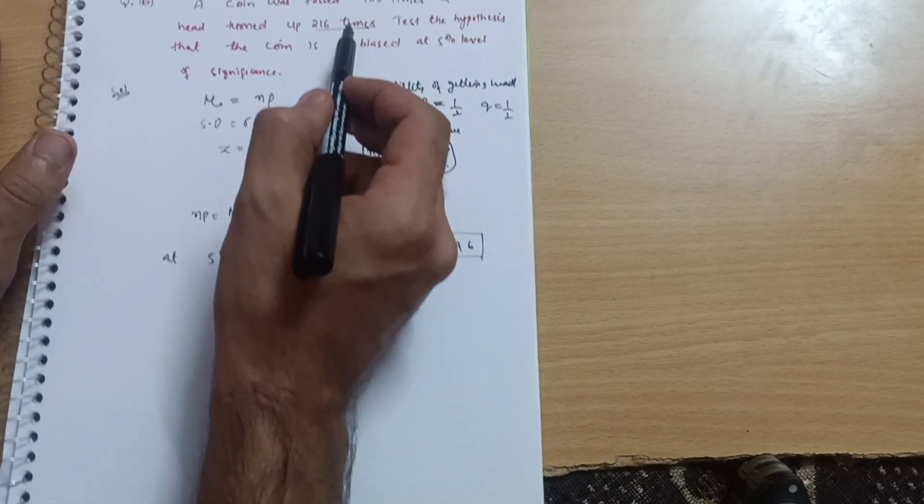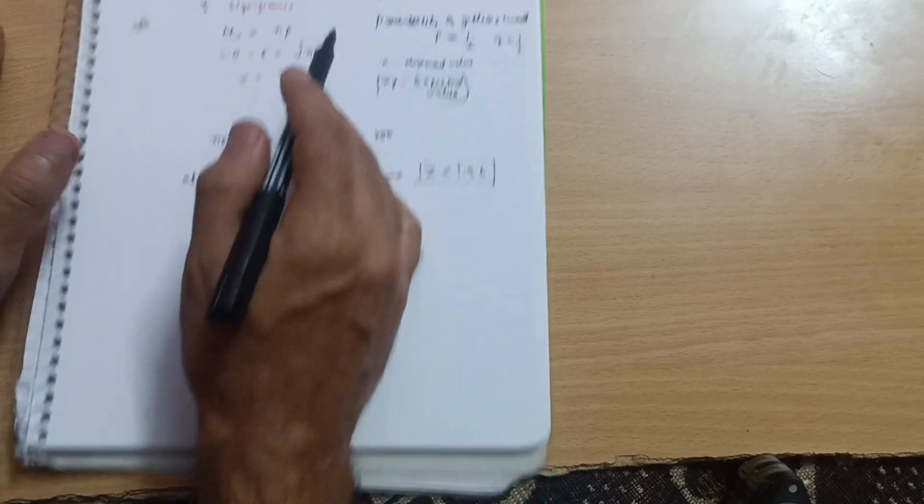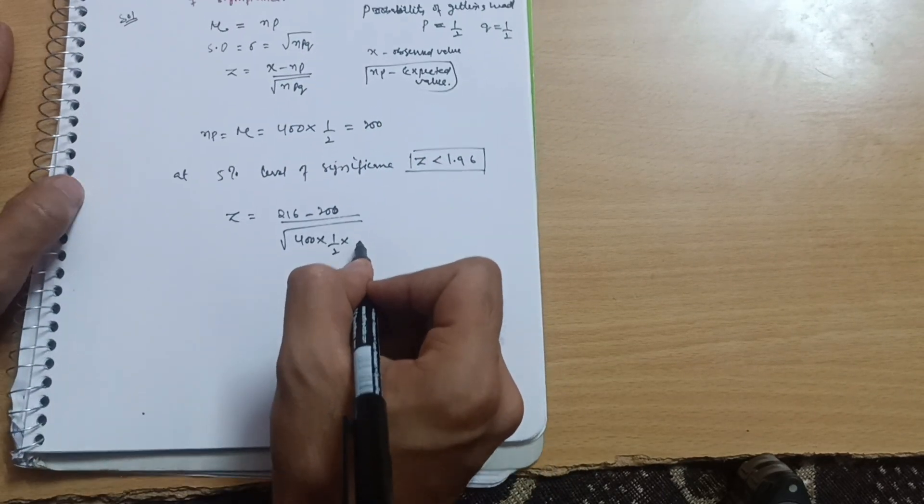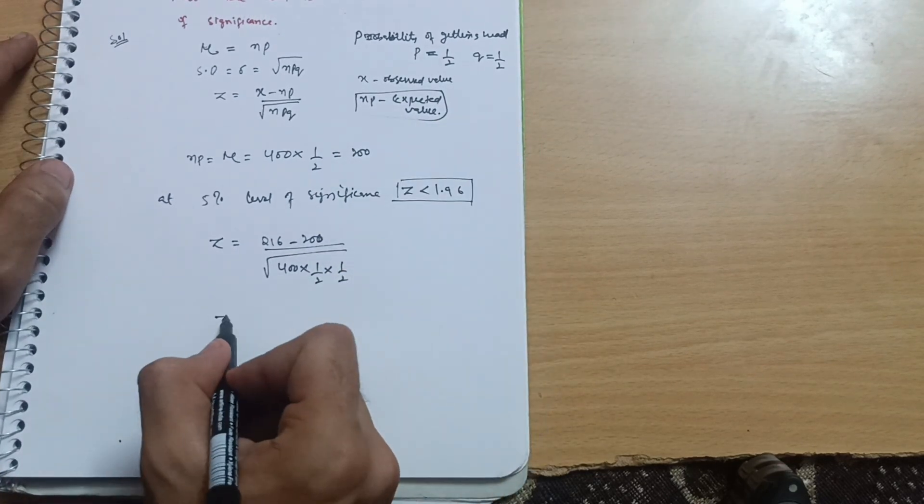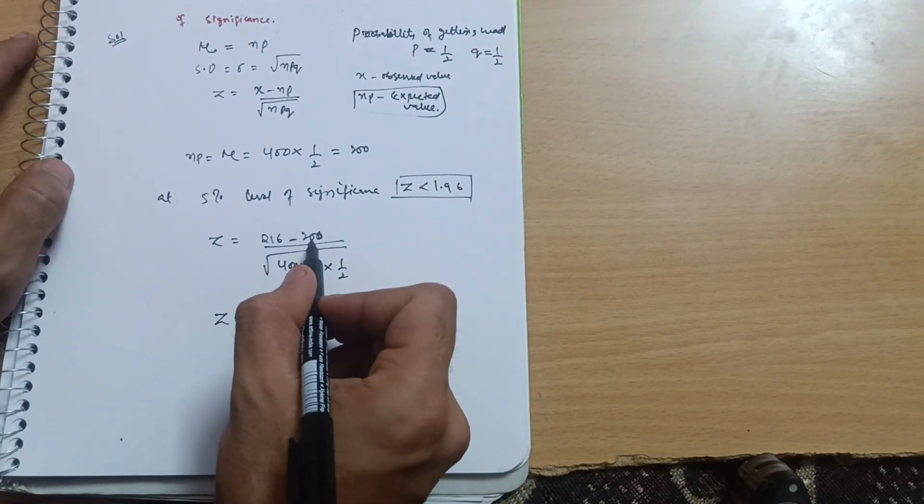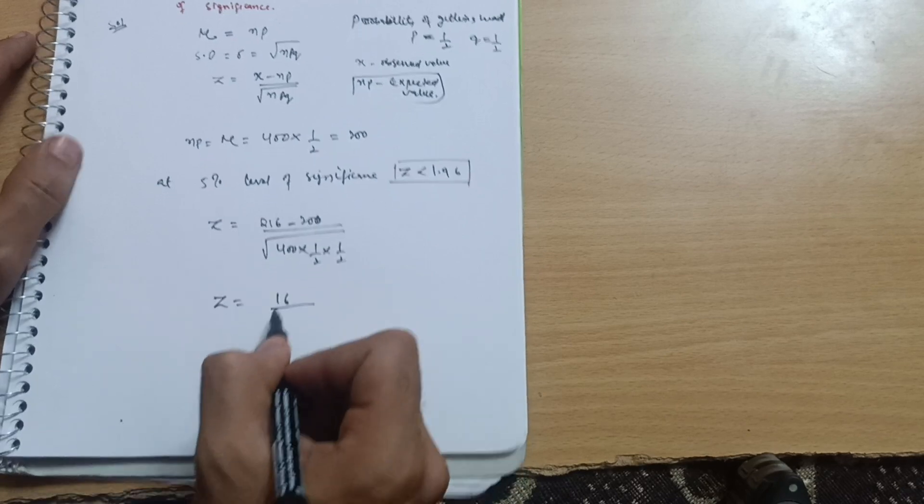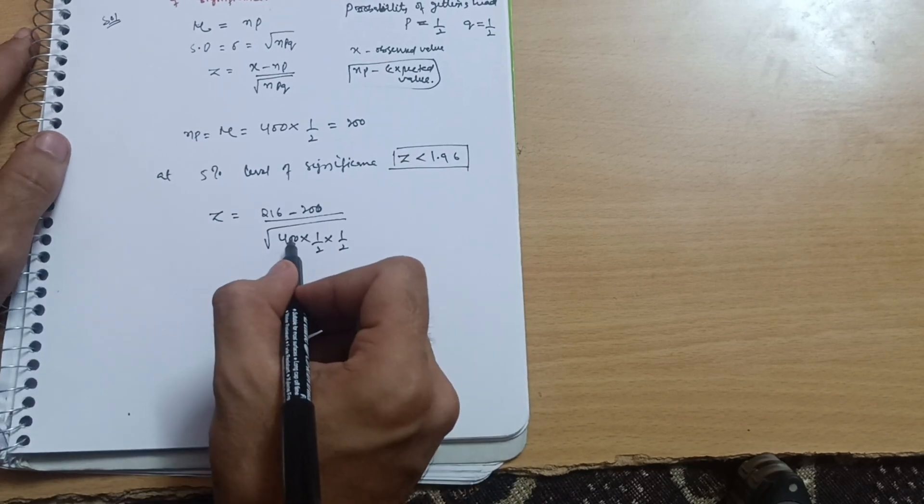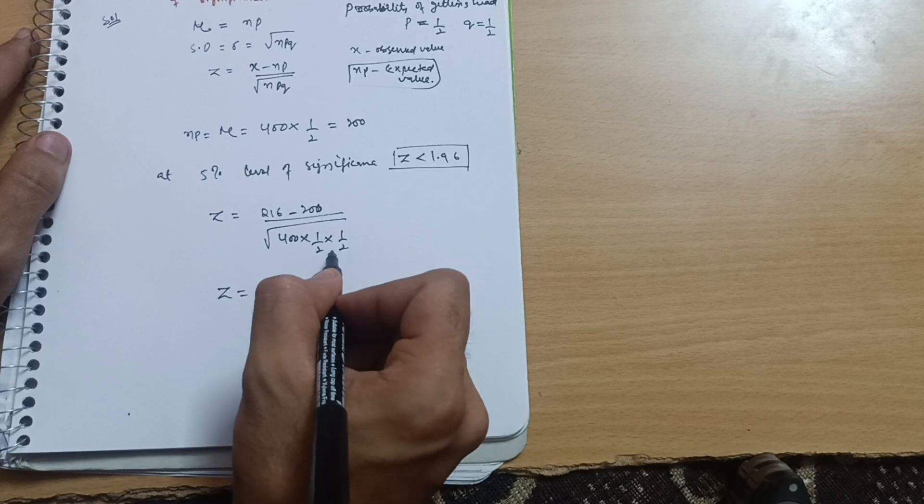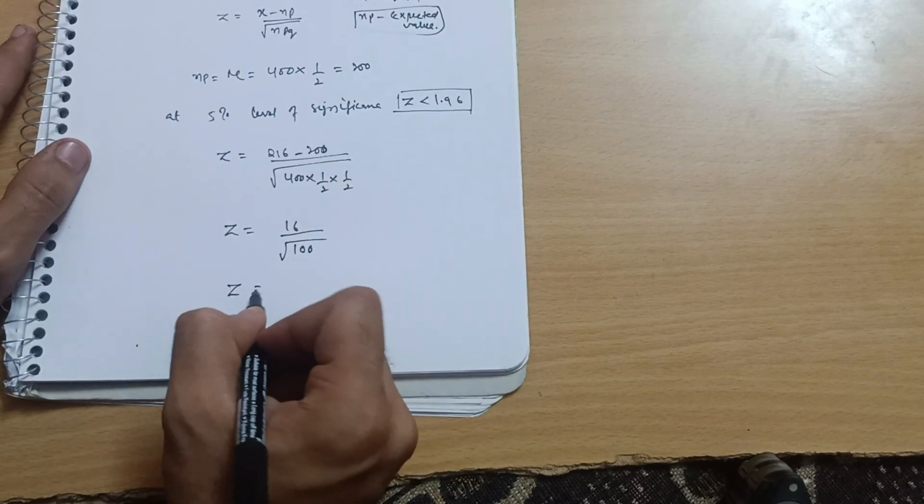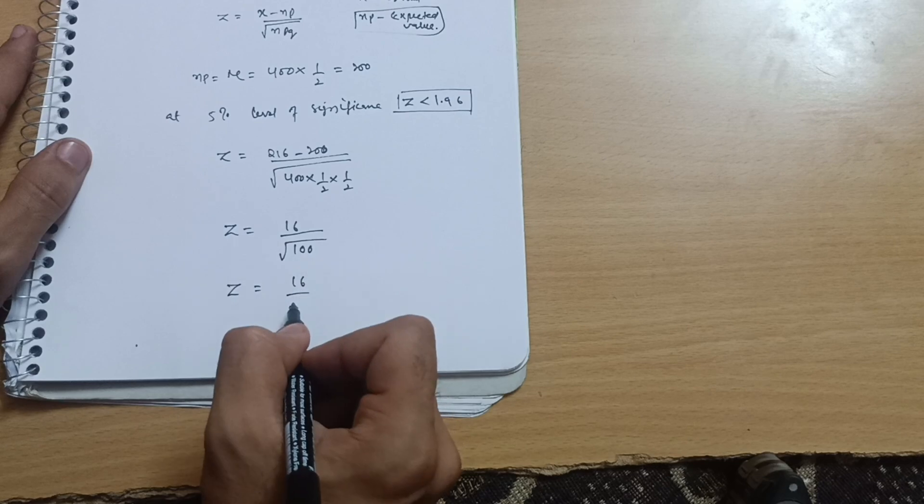n is 400, how many times the coin is tested, that is 400 times, and P value is 1 upon 2 and Q value is also 1 by 2. Here we have calculated. Z equals 216 minus 200, it will come up to 16. Under root of this one, 400 upon 4, that will be 100.